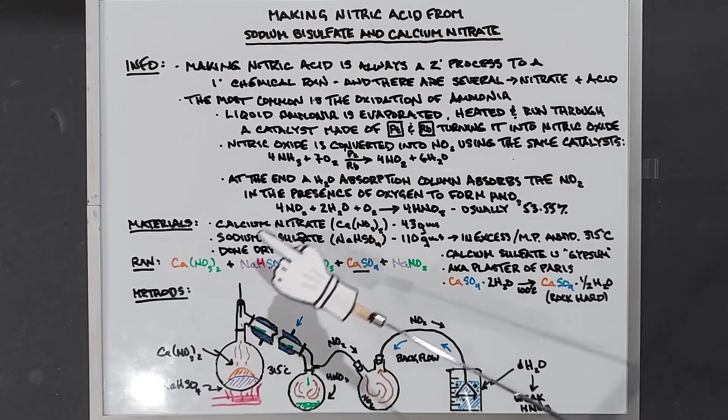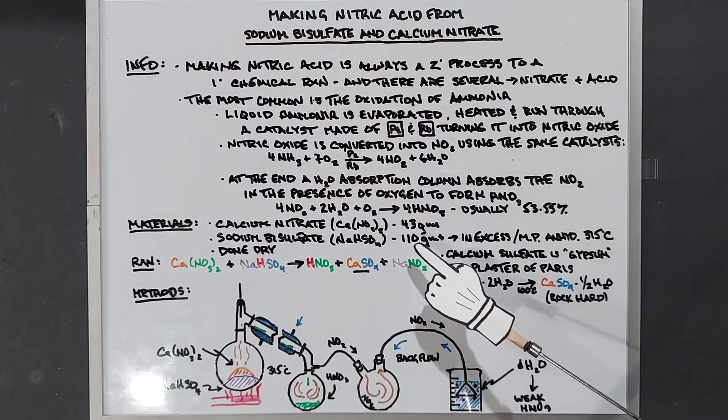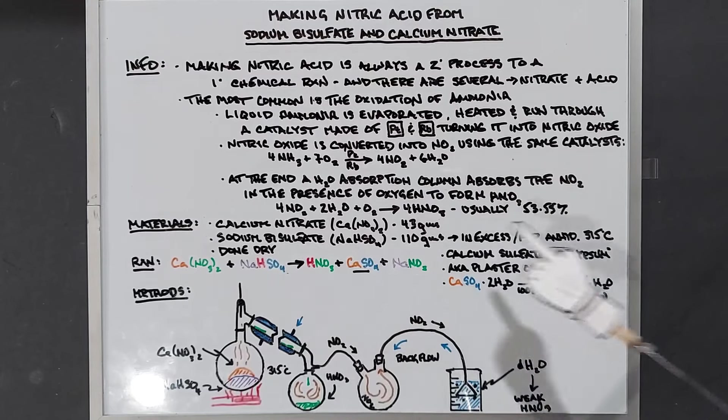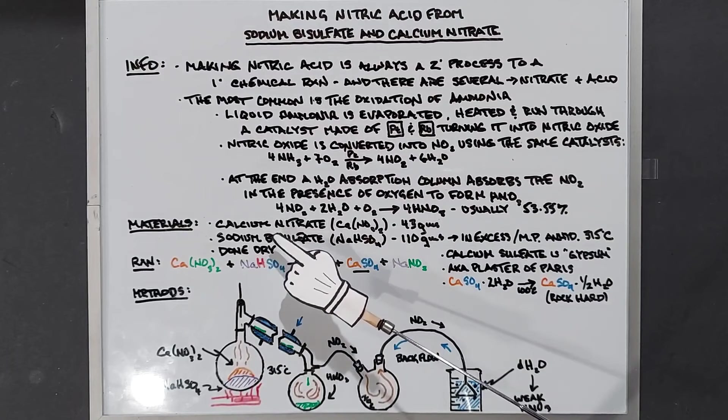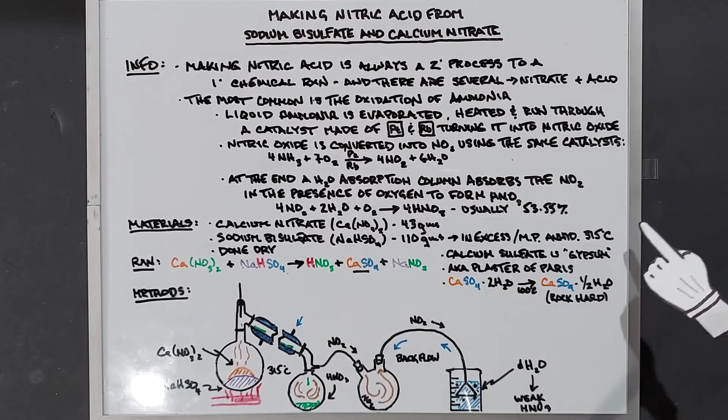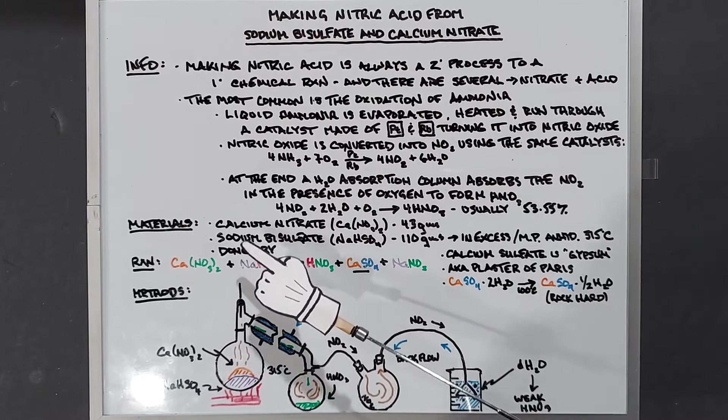In our materials we need calcium nitrate 43 grams and sodium bisulfate 110 grams. This is very excessive. The melting point of this is 315 degrees because we're going to do this dry, and that's important because this first has to melt before the reaction can start to take place. So 315 degrees Celsius is an important mark to meet, otherwise the reaction will not take place.